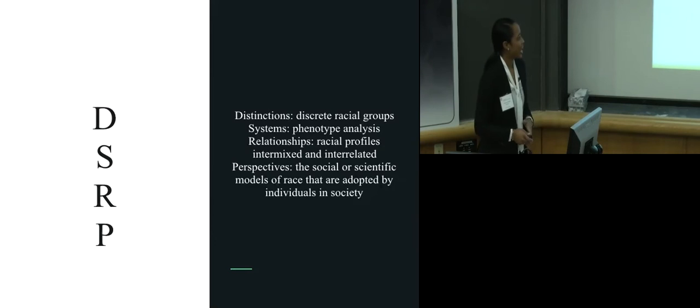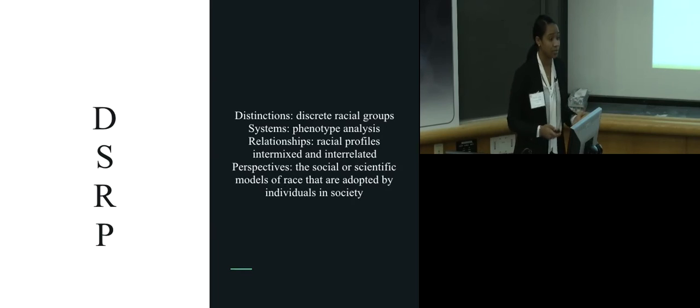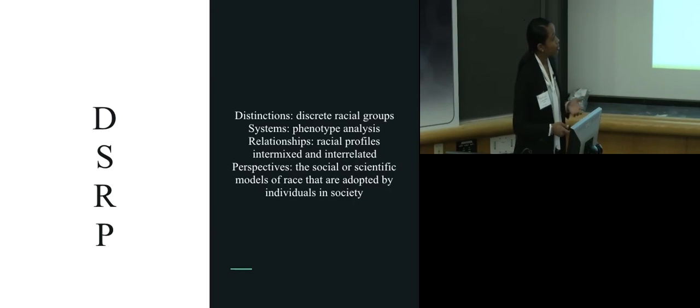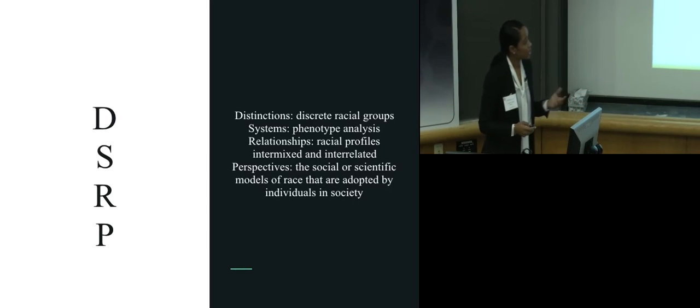This discord, this disconnect, points to a fundamental difference in mental models, which I believe is connected to the fourth rule of systems thinking, which is perspectives. Systems thinking, as has been discussed throughout the day, embraces four simple rules: DSRP - distinctions, systems, relationships, and perspectives - to attempt to understand complex real-world systems such as models of race in the United States.